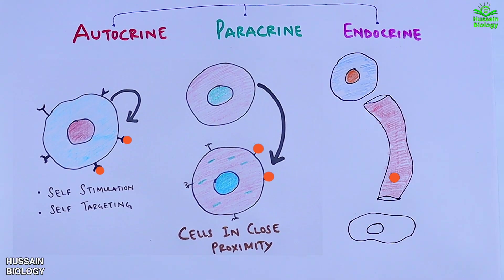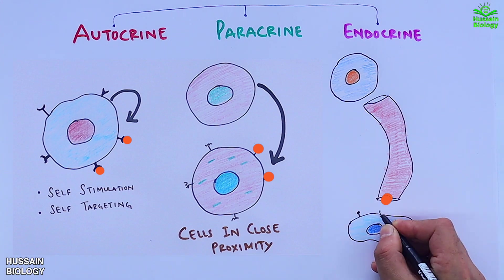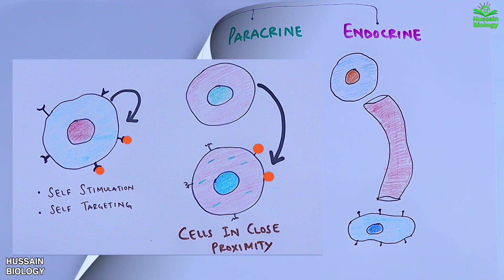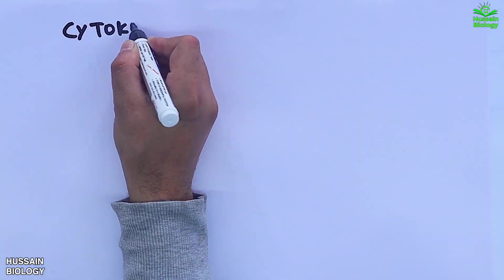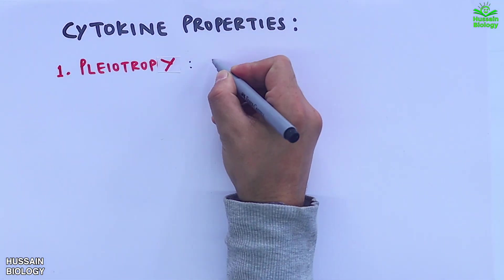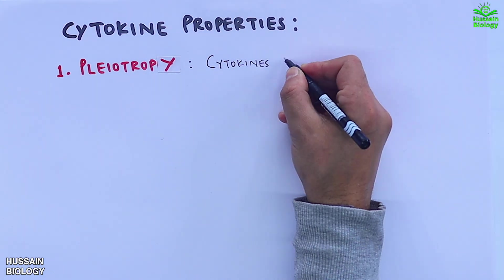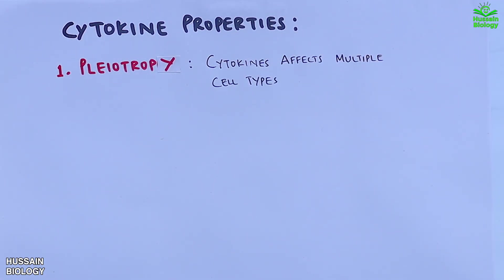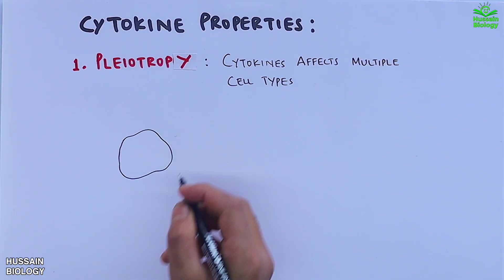The third one is endocrine. Here in this diagram, the cell secretes cytokines into the blood circulation, and then these cytokine molecules travel to the targeting site where cytokines are received by the target cell.